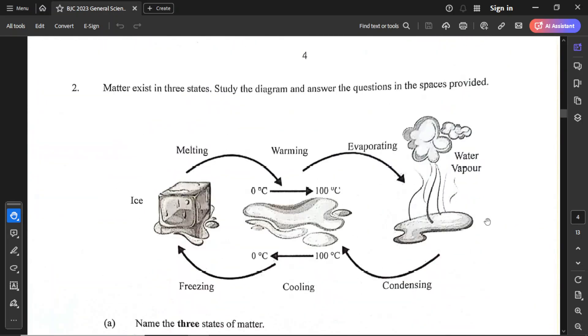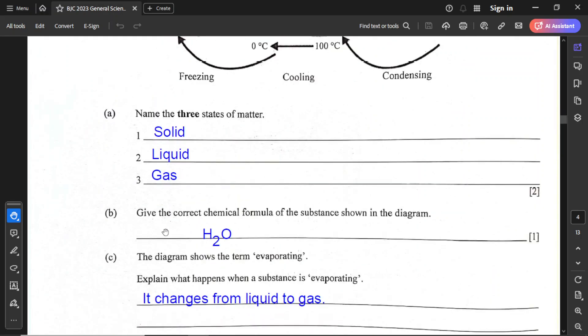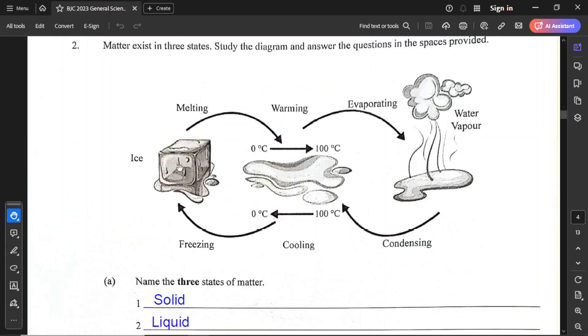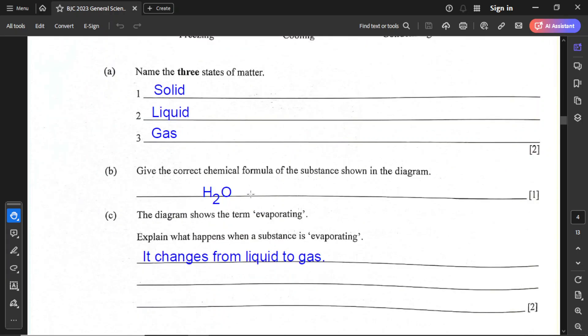That ends question number 1. For question number 2, it says matter exists in 3 states. Study the diagram and answer the questions in the spaces provided. Name the 3 states of matter: solid, liquid, and gas. Give the correct chemical formula for the substance shown in the diagram. If you notice, we have ice, then we have liquid, and then we have gas, so it's water vapor. The correct formula for water here is H2O.